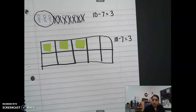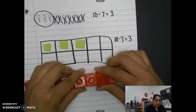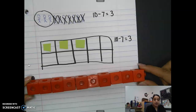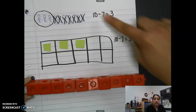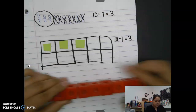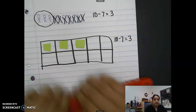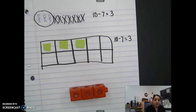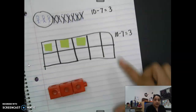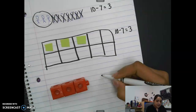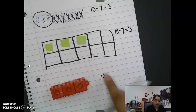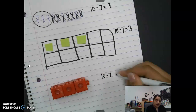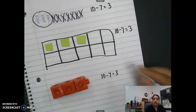Now let's use linking cubes. I have ten linking cubes. Seven leprechauns ran away, so I take off seven: one, two, three, four, five, six, seven. How many linking cubes are left? One, two, three. I started with ten, subtracted seven, and the difference is three.